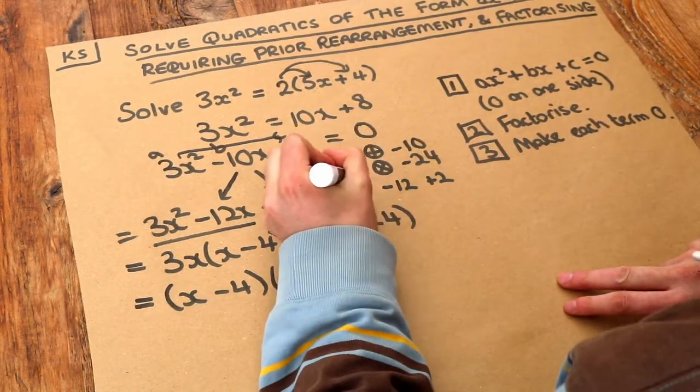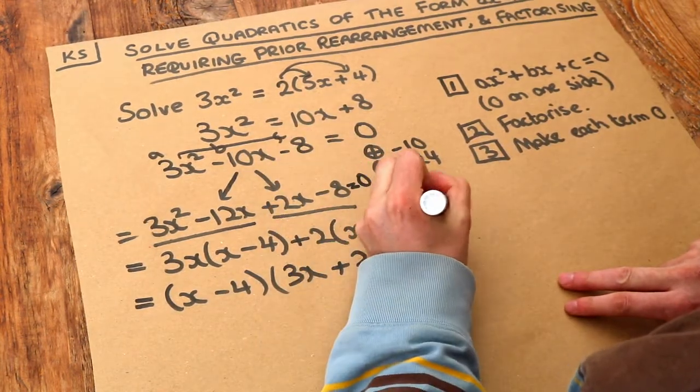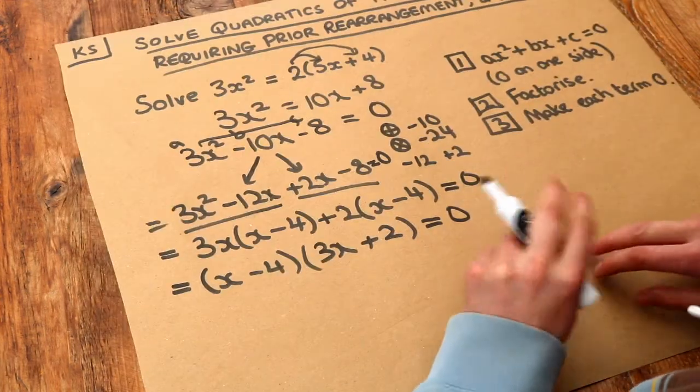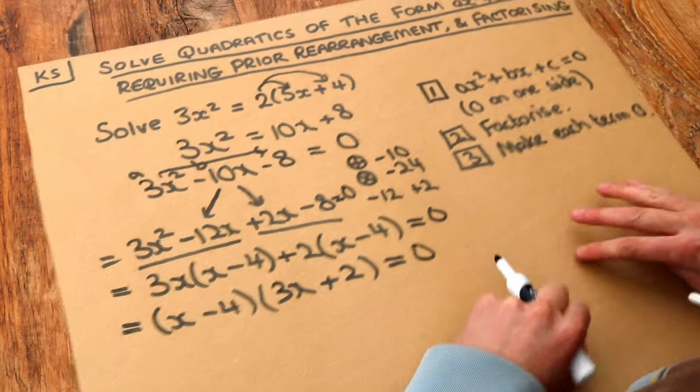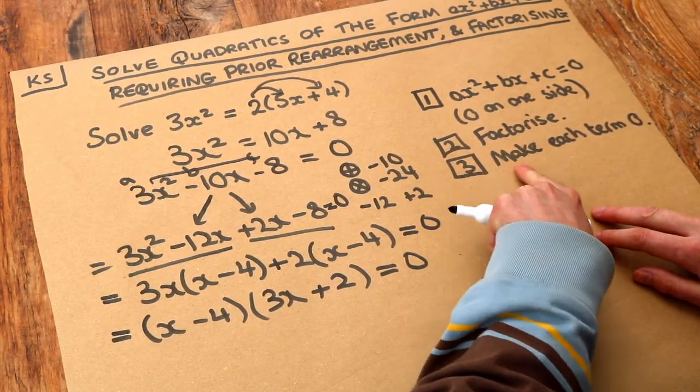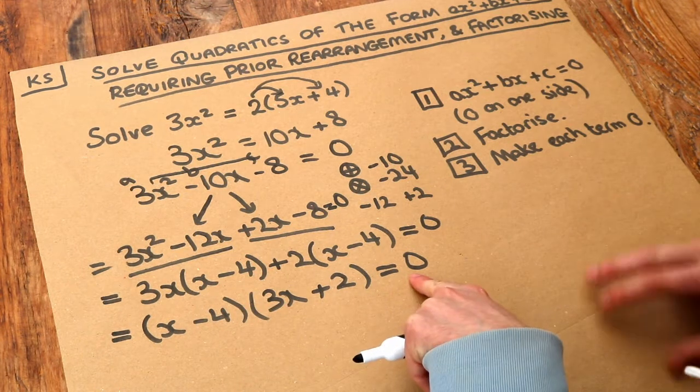And note, by the way, we still have that equals 0 there. So I left it out here by mistake. Equals 0. Equals 0. Because it's an equation, it's not just an expression. So we've now managed to do step 2. We've factorized it.